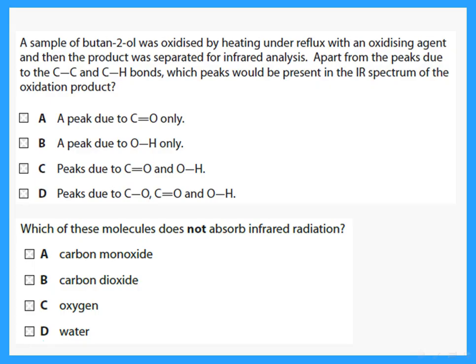A sample of butan-2-ol was oxidized by heating under reflux with an oxidizing agent and the product was separated for IR analysis. Apart from the peaks due to C-C and C-H bonds, which peaks would be present in the oxidation product? Butan-2-ol is a secondary alcohol, so when oxidized it gives a ketone. You would not expect a peak for OH at all — you should have only a peak for the C=O of the ketone.